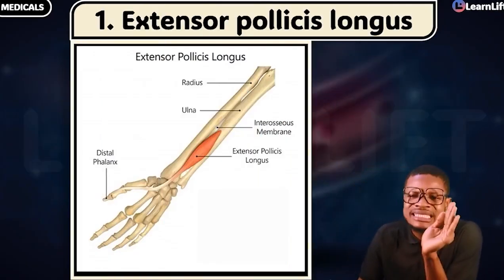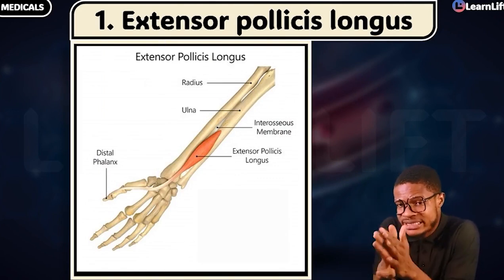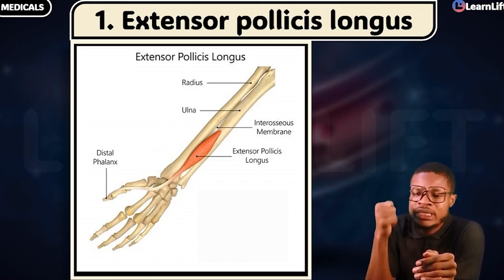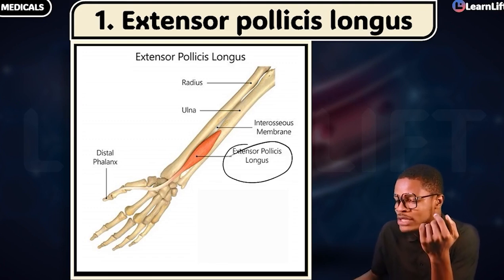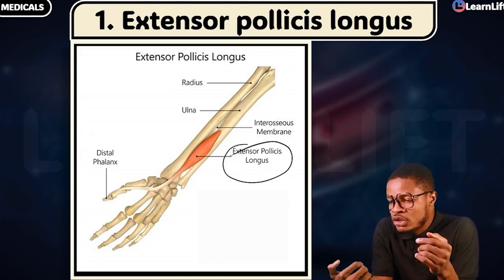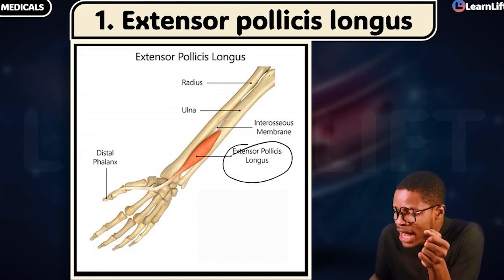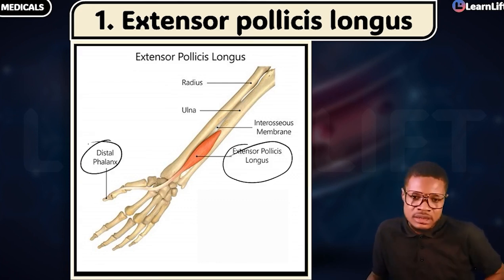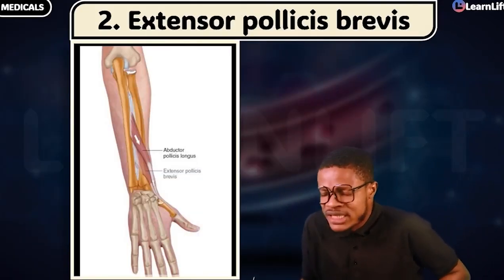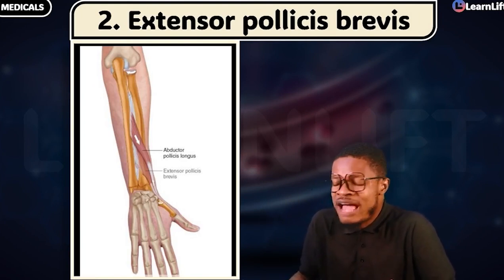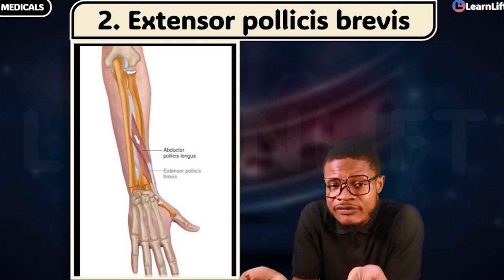The first is extensor pollicis longus — from the name, extensor means extension, pollicis means thumb, longus means it is a long muscle. So extensor pollicis longus helps in the extension of the thumb, and it inserts into the distal phalanx. Next is extensor pollicis brevis — brevis means short. Extensor pollicis brevis and extensor pollicis longus carry out the same function, just that one is long and one is short.